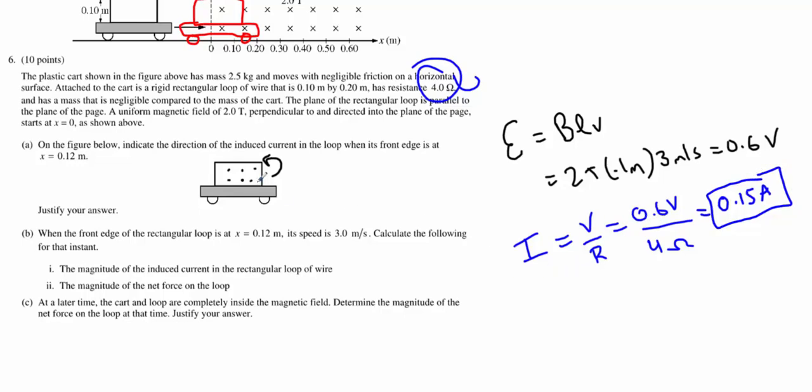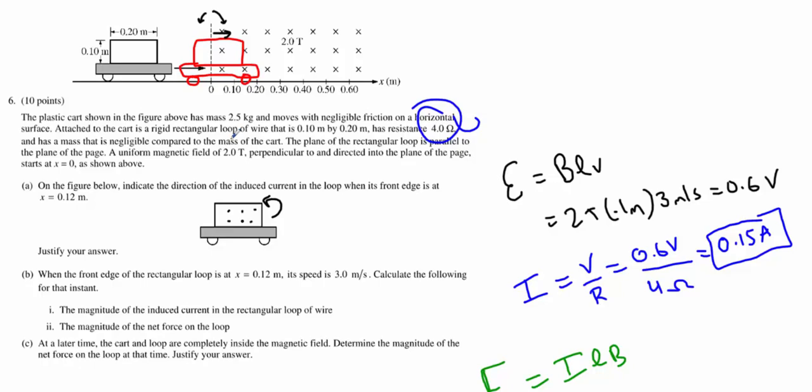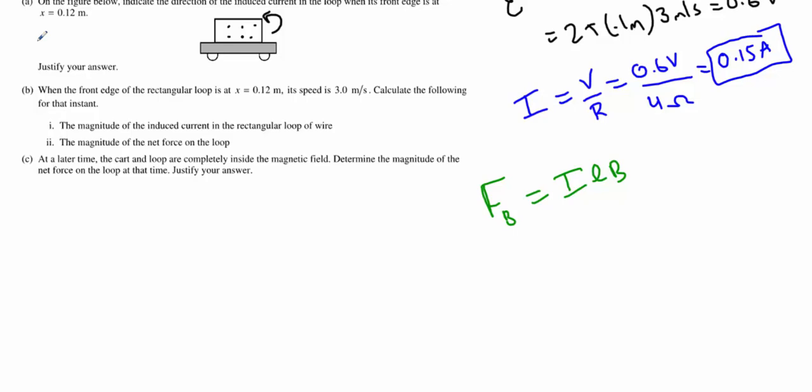Now that we know the current, we can determine the force in the loop, because the force on any current carrying wire in an external magnetic field is ILB. Now we do need to multiply this by some trig, if the orientation is not perfectly perpendicular. But you'll notice that it is perfectly perpendicular, so I think it's okay to leave off the sine theta. I'm going to toss sine theta in here anyhow, and show that sine of 90 is 1, so we will trim it out.